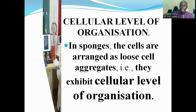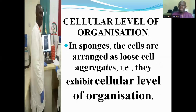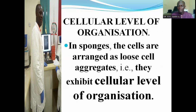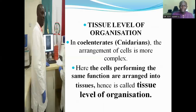Now I want to look at the cellular level of organization. In sponges, the cells are arranged as loose cell aggregates — they exhibit cellular level of organization. They do not form any kind of relationship; they are not related in any way in their activities and do not come together to carry out specific functions. Each cell is independent, carrying out its own activities. Such organisms are said to exist in the cellular level of organization.